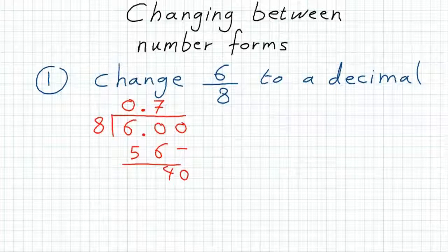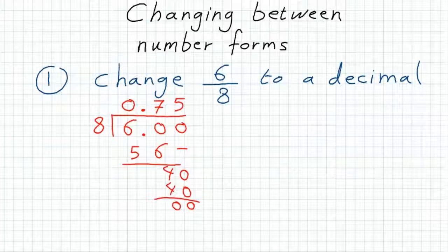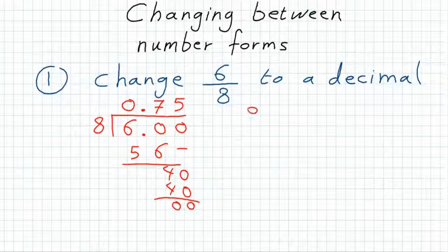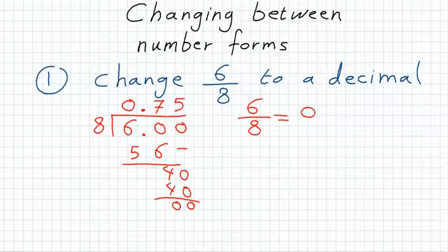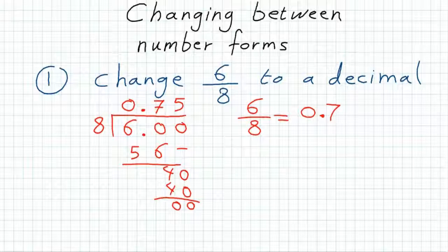40 divided by 8 is 5. 5 times 8 is 40. And this is the final answer here. So, 6 over 8 is going to be 0.75.